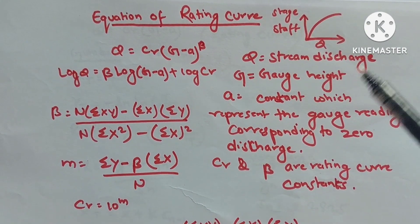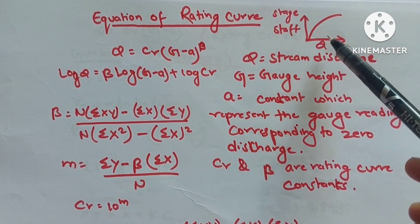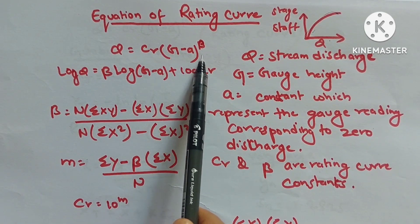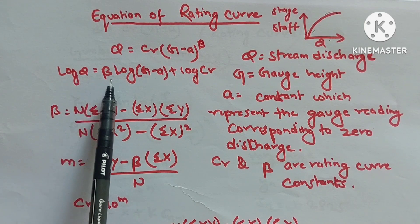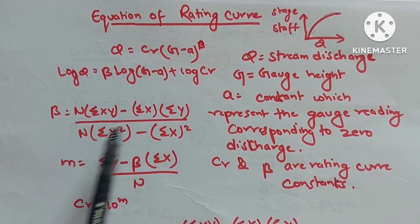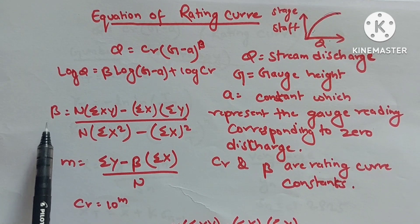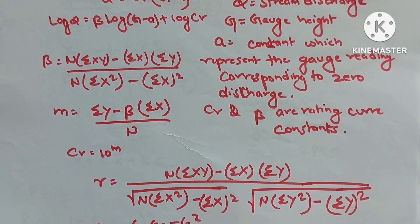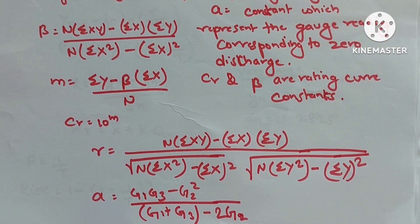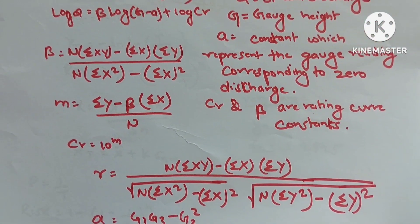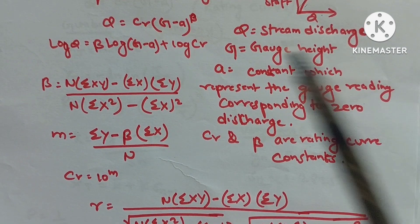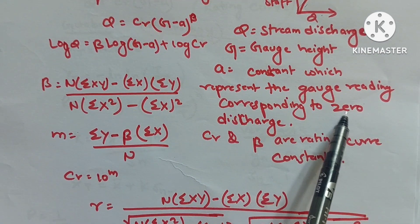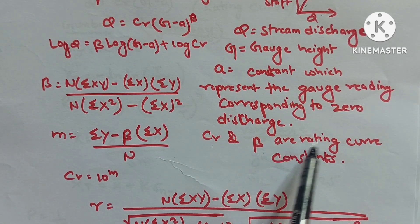Rating curve equation: Q = CR(g − A)^β, log Q = β·log(g − A) + log CR, where Q is stream discharge, g is gauge height, A is constant representing gauge reading at zero discharge, and CR and β are rating curve constants.